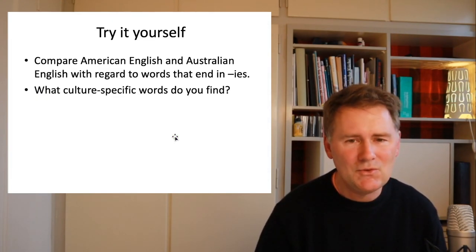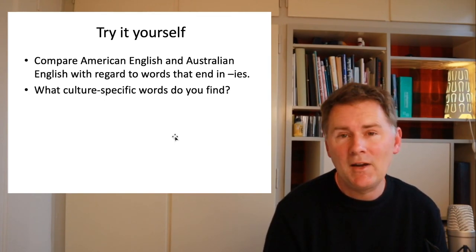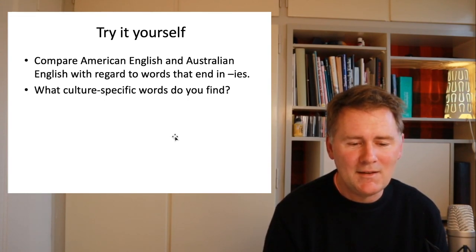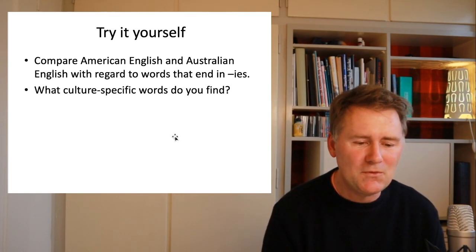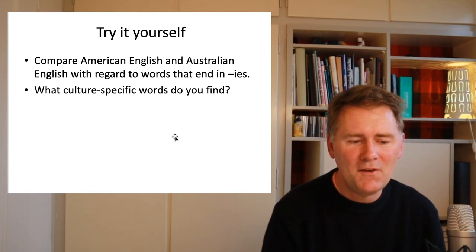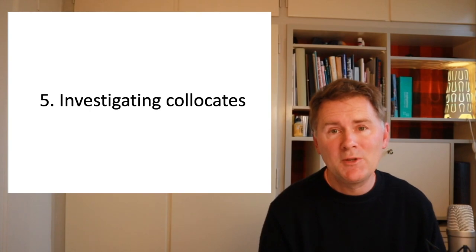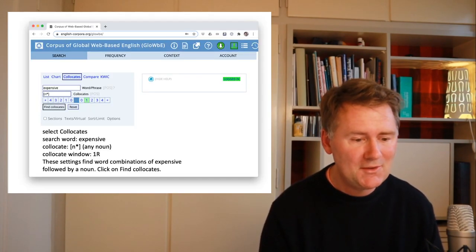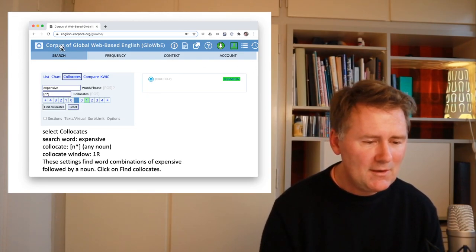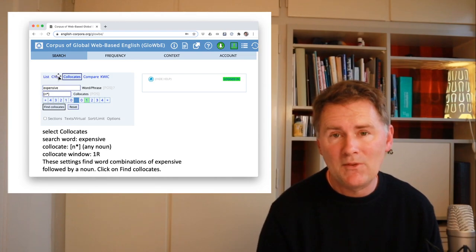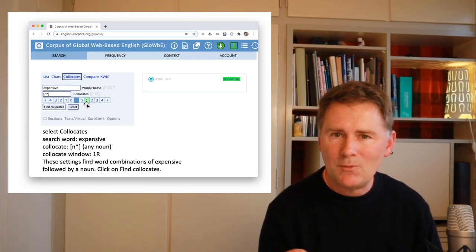You can use the Globe to really contrast two varieties and find out words with cultural significance. I'd like us to do this a little bit more — try it yourself. Compare American English and Australian English with regard to words that end in 'ese.' You can use the search pattern we've used before and try to find culture-specific words that end in 'ese.'